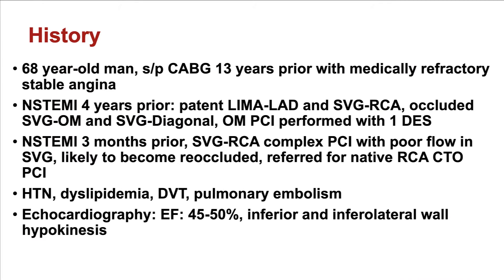The patient had coronary bypass 13 years prior to this intervention. He had presented recently with non-STEMI due to occlusion of the saphenous vein graft. That was recanalized, but because of high likelihood of the vein graft to become reoccluded, he was referred for PCI of the native right coronary artery chronic total occlusion.